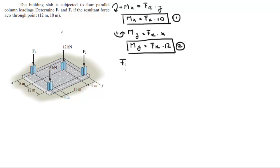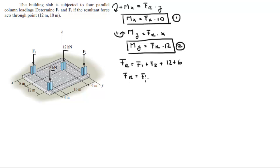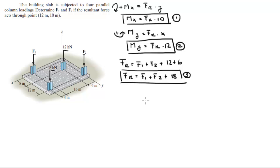FR is equal to F1 plus F2 plus 12 plus 6 — basically the addition of these four forces. So FR is equal to F1 plus F2 plus 18. Call this equation 3.